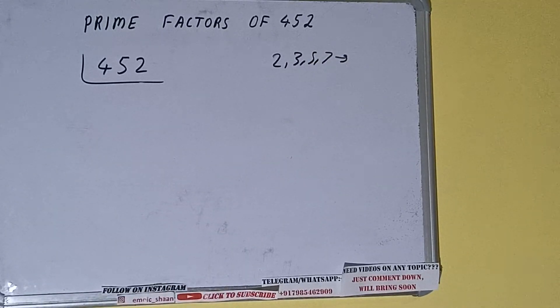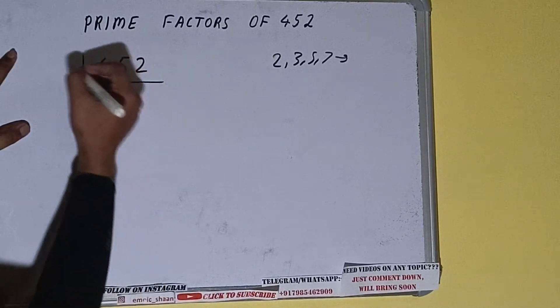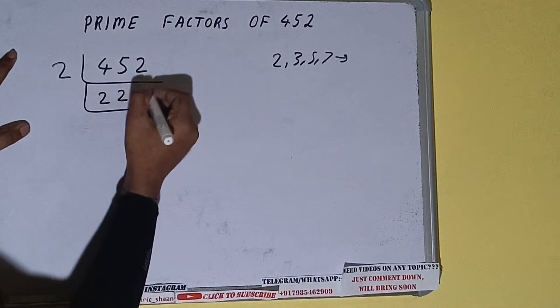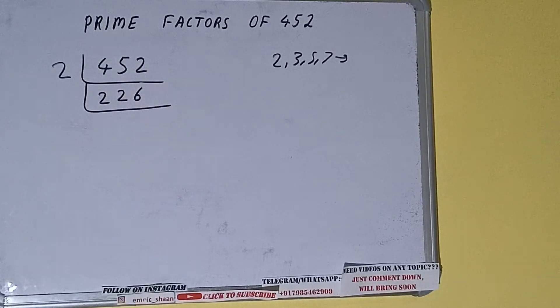All right, so we'll be checking with the lowest prime number we have, that is two. Is the number 452 divisible by two? Yes it is, because the number is even. So divide it. We'll be having 226.